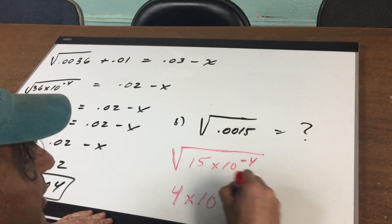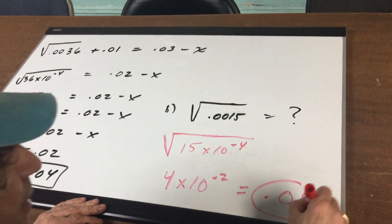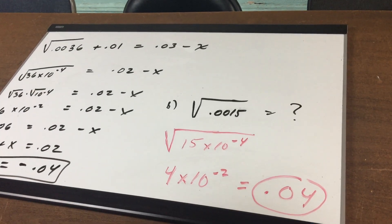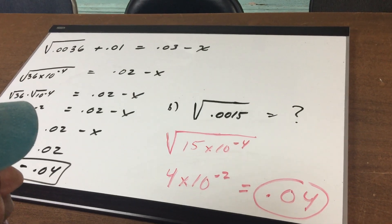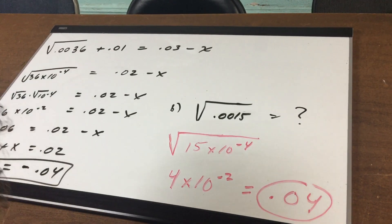So I come up with 4 times 10 to the minus 2, which is approximately, because we use 16 instead of 15, 0.04. So you should be able to hit that at blitzing speed. So these are two questions on how to maneuver a radical.